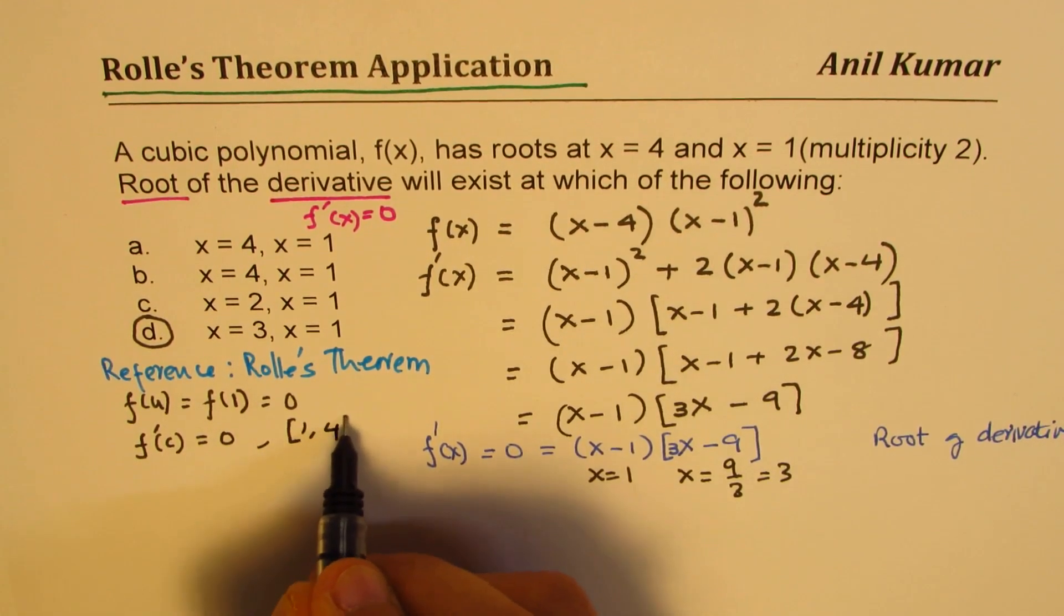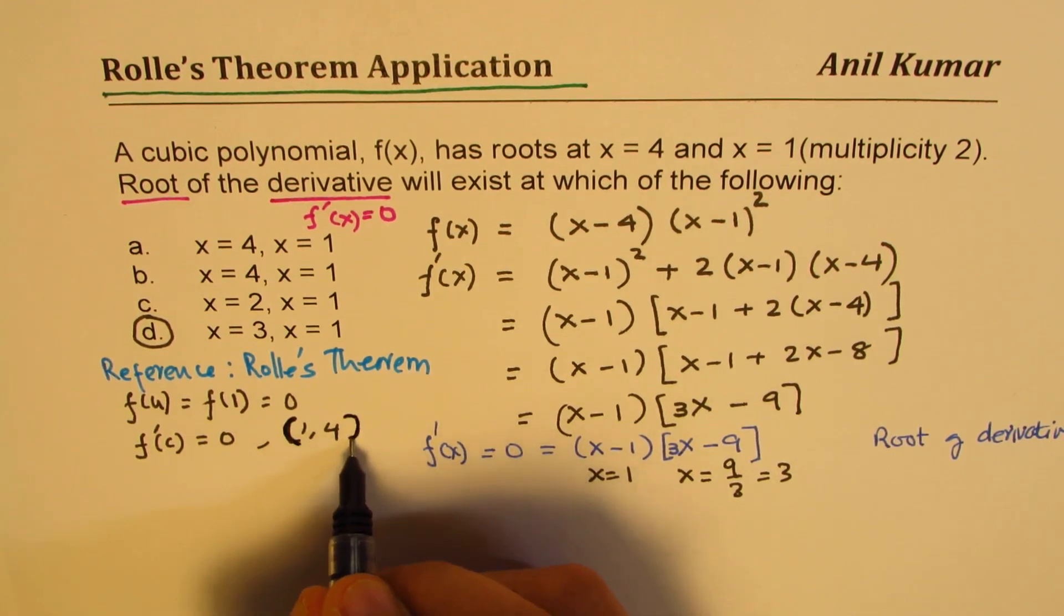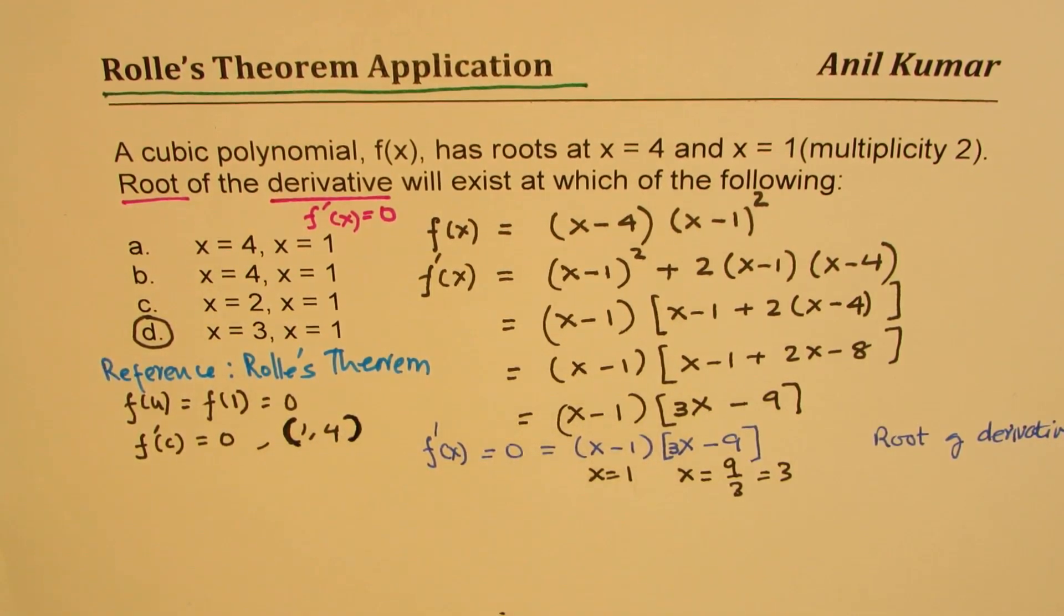So we're looking for a value, I should say in the open interval, between 1 to 4, right? It has to be 0. So that's the Rolle's theorem.